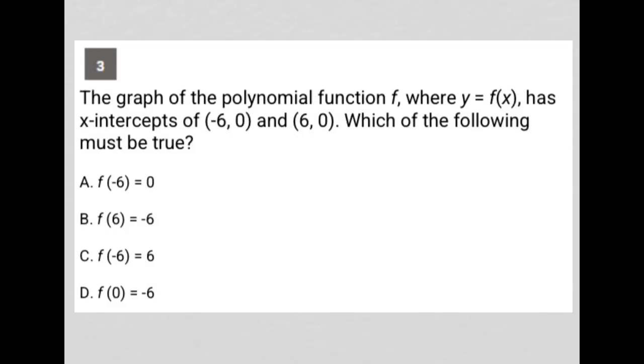So, this question says the graph of the polynomial function f, where y equals f of x, has x-intercepts at negative 6, 0 and 6, 0.